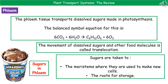The second plant transport system is the phloem. The phloem is the tissue that transports the dissolved sugars made in photosynthesis. The balanced symbol equation for photosynthesis is 6CO₂ + 6H₂O → C₆H₁₂O₆ + 6O₂, or in words: carbon dioxide plus water makes glucose and oxygen. Once we've made that glucose, we need to move it from the leaves where it's made to all other cells around the plant that need it.